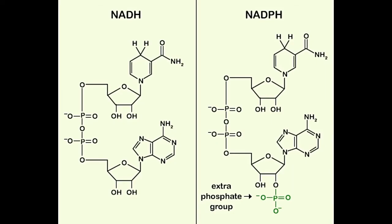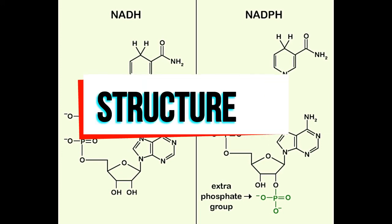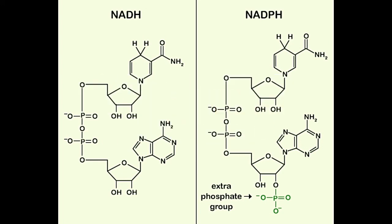As far as their structure is concerned, the NAD molecule is a dinucleotide, composed of two nucleotides joined through their phosphate groups. Each nucleotide is made up of a five-carbon sugar, deoxyribose, attached to a nitrogen base, adenine, and a phosphate group. The NADF molecule is also made up of two nucleotides, but contains an extra phosphate group attached to the ribose of adenosine.